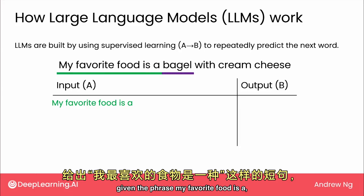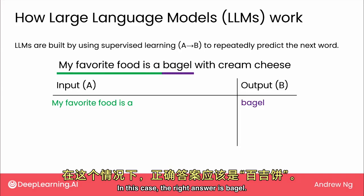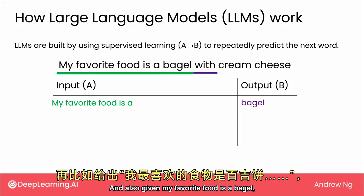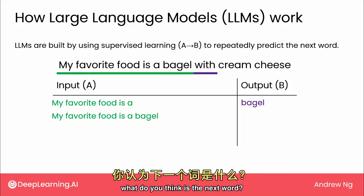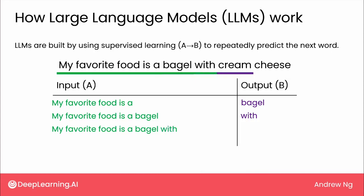we now have one data point that says: given the phrase 'my favorite food is a,' what do you think is the next word? In this case, the right answer is 'bagel.' And also, given 'my favorite food is a bagel,' what do you think is the next word? It's 'with,' and so on.